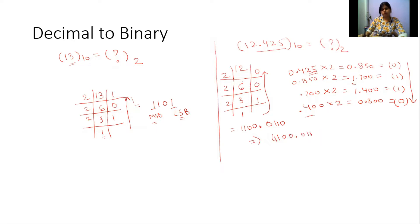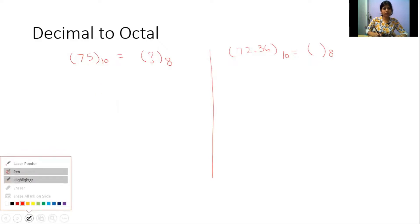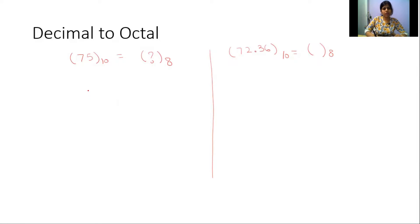The complete binary equivalent of 12.45 in base 10 is 1100.0111 in base 2. This covers decimal to binary conversion. Now continuing in the number system series, let's see decimal to octal. The process is the same — since octal has base 8, we divide by 8 instead of 2.